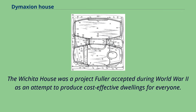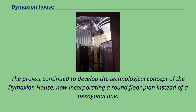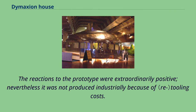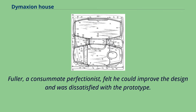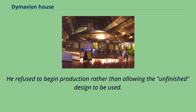The Wichita House was a project Fuller accepted during World War II as an attempt to produce cost-effective dwellings for everyone. The project continued to develop the technological concept of the Dymaxion House, now incorporating a round floor plan instead of a hexagonal one. The reactions to the prototype were extraordinarily positive; nevertheless it was not produced industrially because of tooling costs. Fuller, a consummate perfectionist, felt he could improve the design and was dissatisfied with the prototype. He refused to begin production rather than allowing the unfinished design to be used.